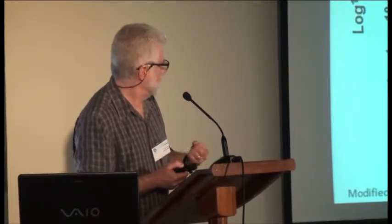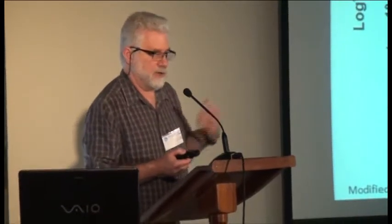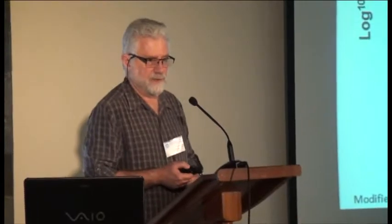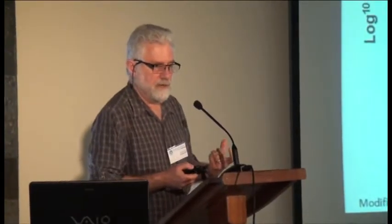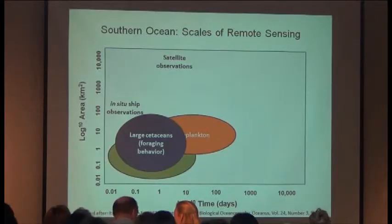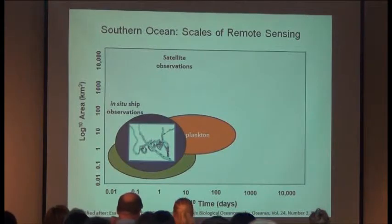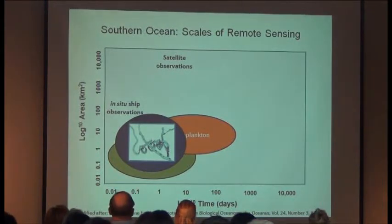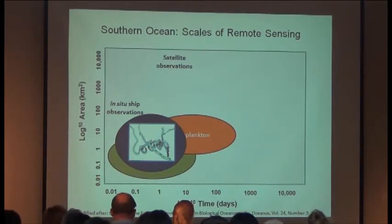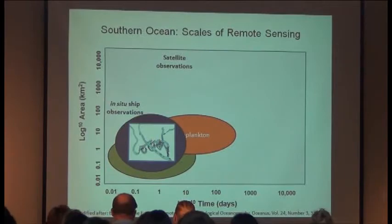When we're looking at the foraging behavior — Ari just showed some examples of foraging behavior — we may be looking at that at a very different spatial and temporal scale. Down at the scale of animal movement and behavior, at the scale of minutes and meters, we're looking at orders of magnitude differences in terms of the observations.